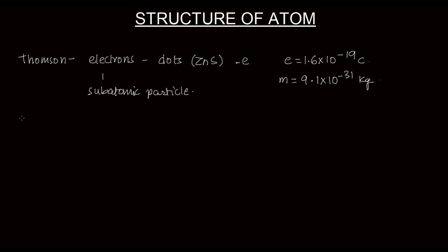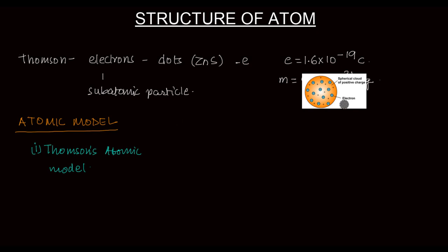So an elementary attempt was made by Thomson and he proposed a model. So we'll call that an atomic model. Since he was responsible for finding out a subatomic particle, people were looking forward to him to reveal what the atom would look like. He came up with his own model of atom which is called after his name, the Thomson's atomic model.